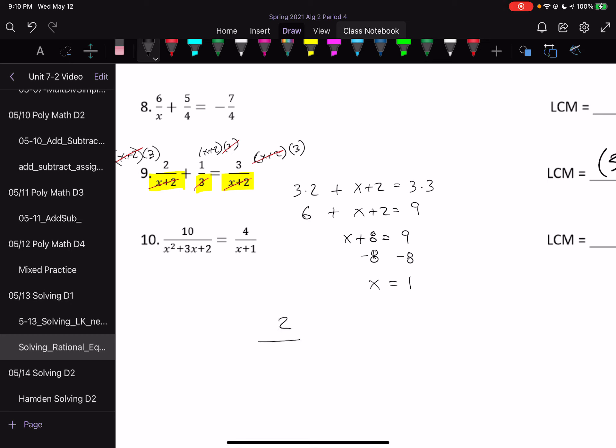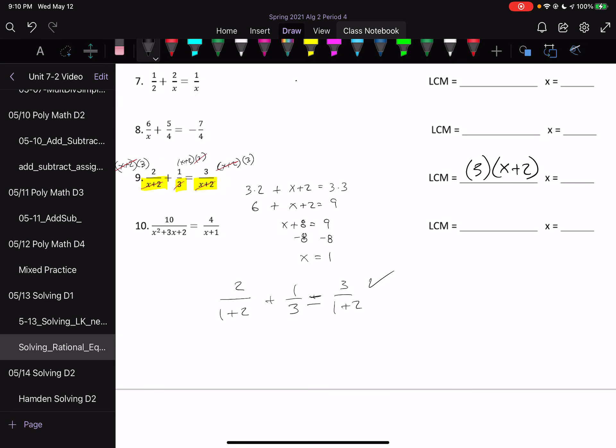Substituting on these things, 1 plus 2 plus 1 over 3 equals 3 over 1 plus 2. So, I think everything is fine here, so I have a solution of 1.